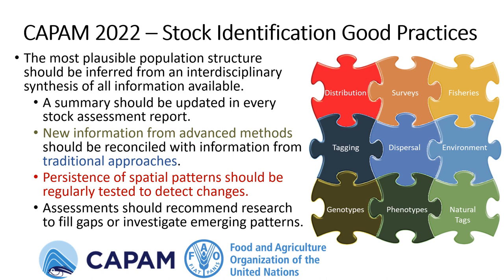In the context of climate change and shifting distributions, we should also routinely test the persistence of spatial patterns to detect if there have been any shifts in the spatial distribution of the fishery or the resource, or any geographic variation and patterns within the stock. And finally, if there are any information gaps, we should form research recommendations to attempt to fill those gaps in future stock assessments, to hopefully represent the population structure better in stock assessment and fishery management.